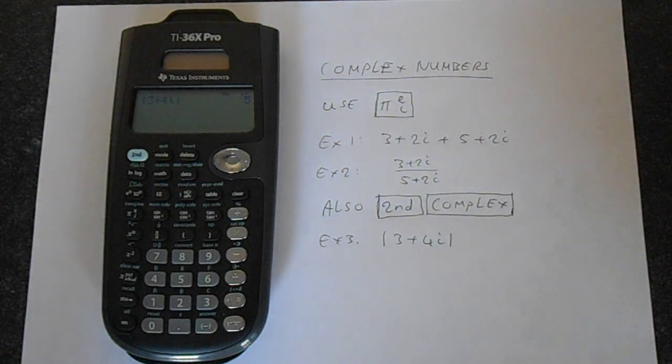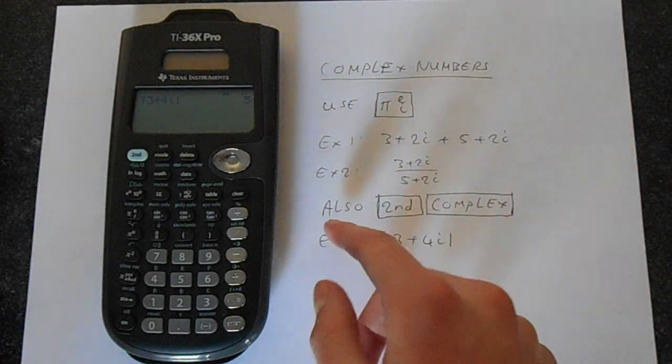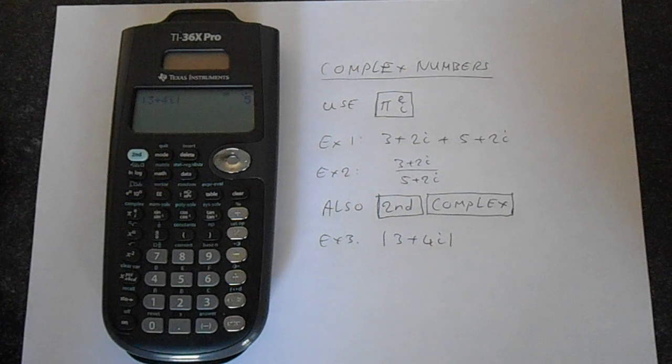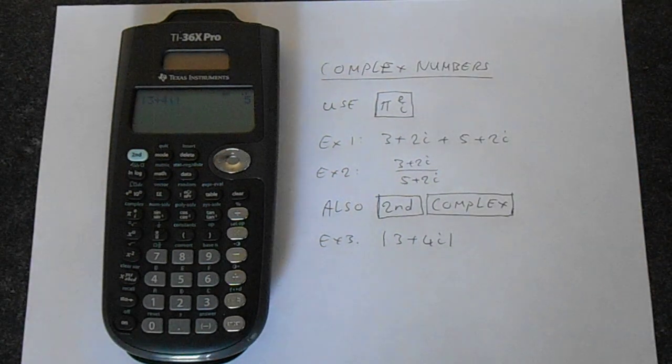So that's a couple of things in complex numbers. Addition, subtraction, division, multiplication. Use the brackets. And you can find the magnitude and the conjugate and various other things. So hopefully this video is helpful to you, and thank you for watching.